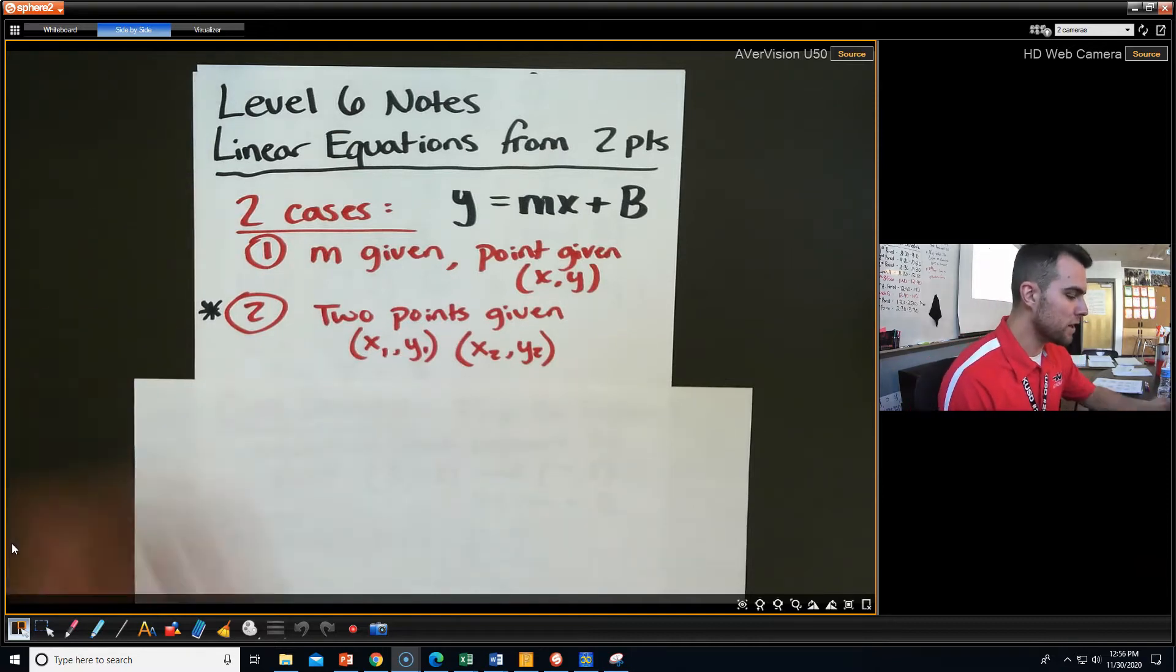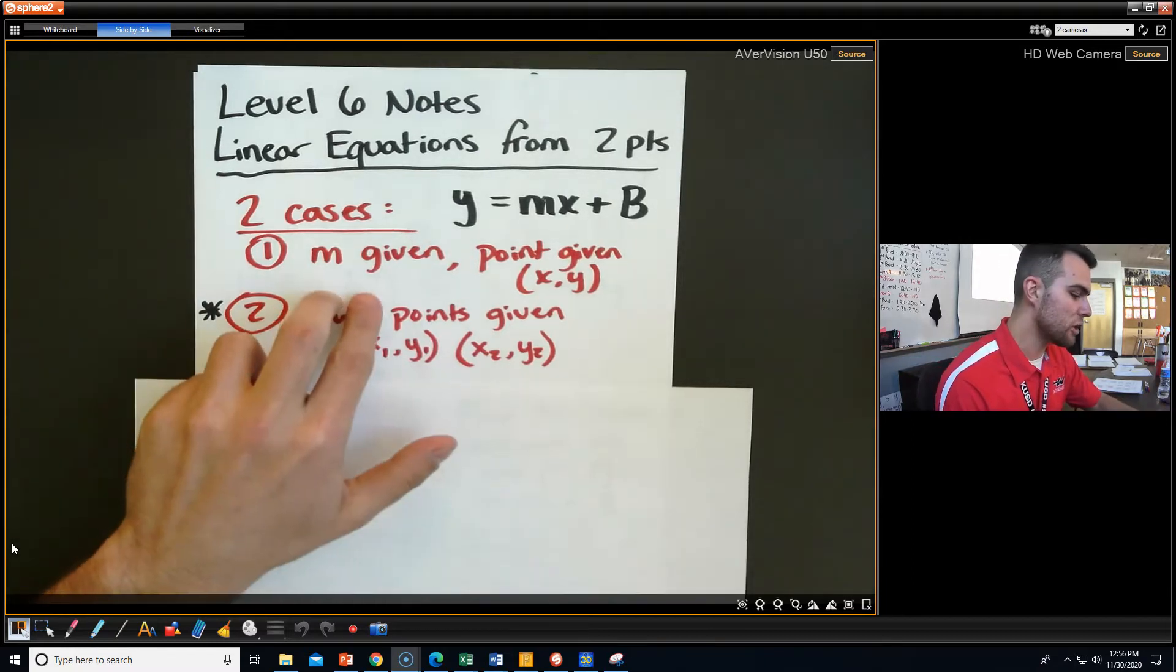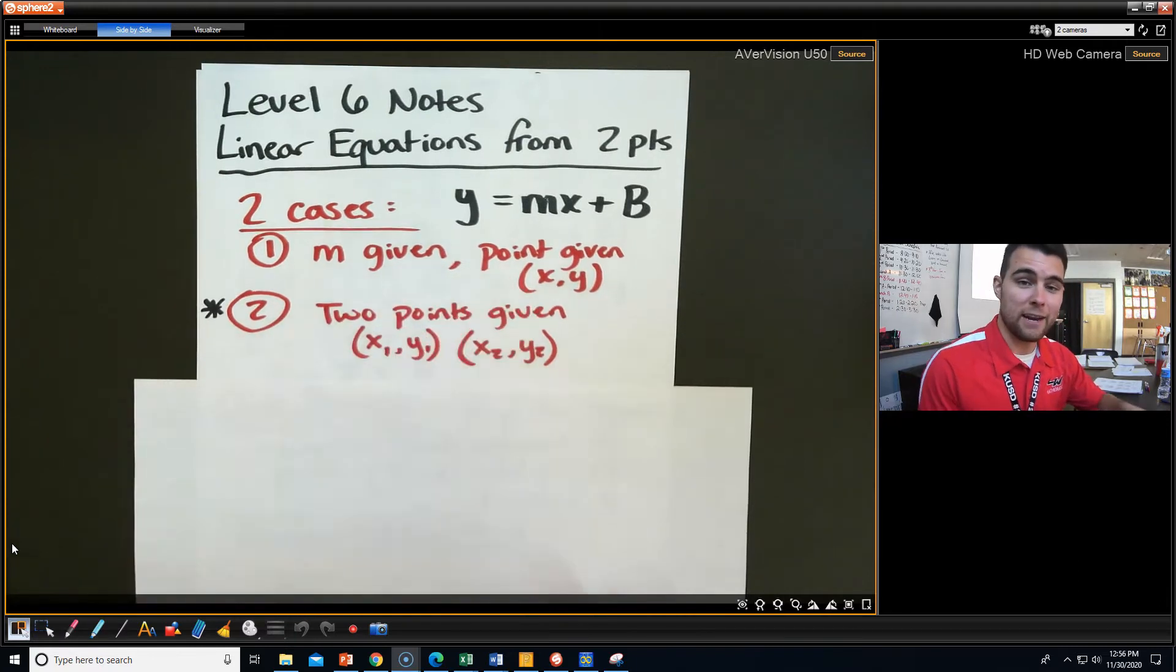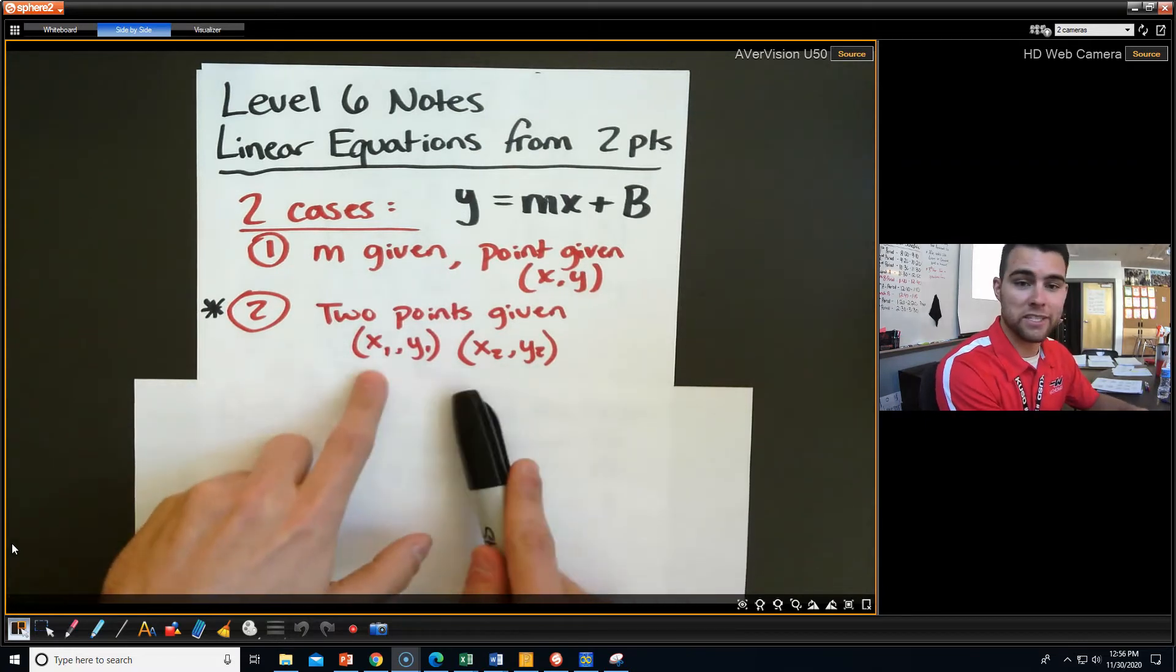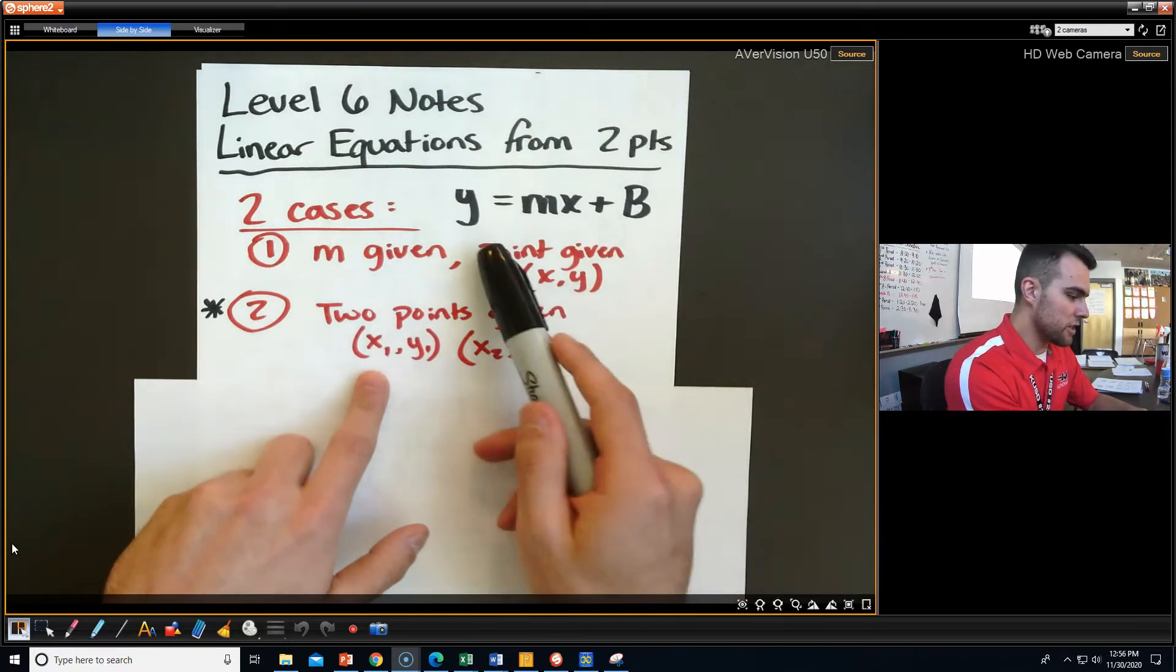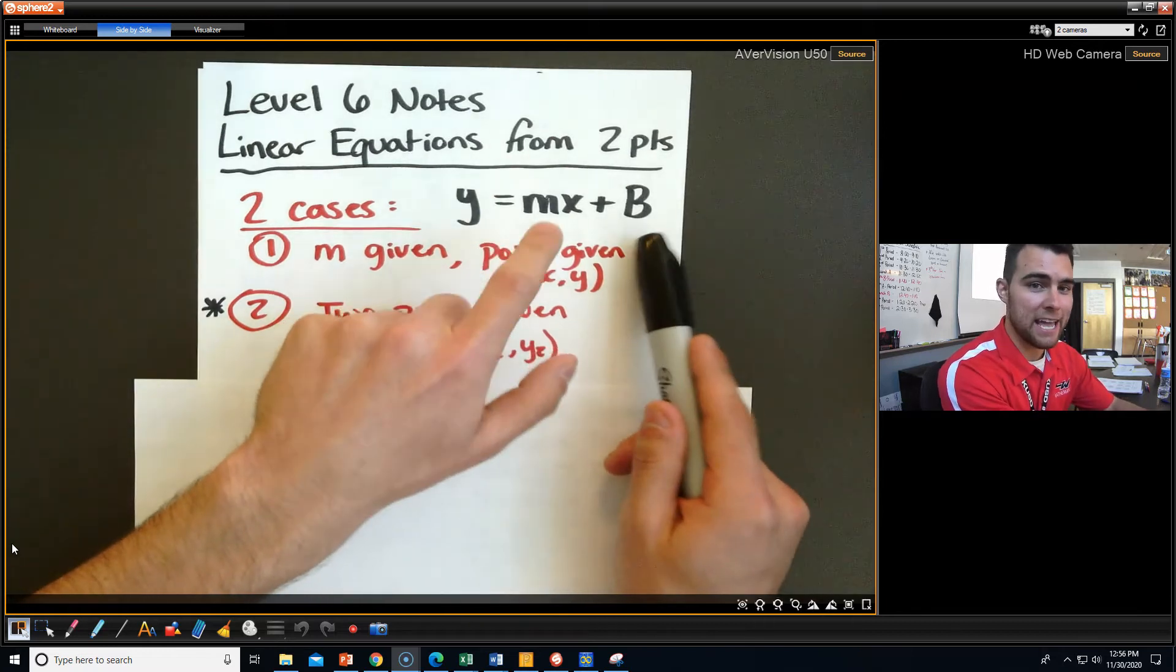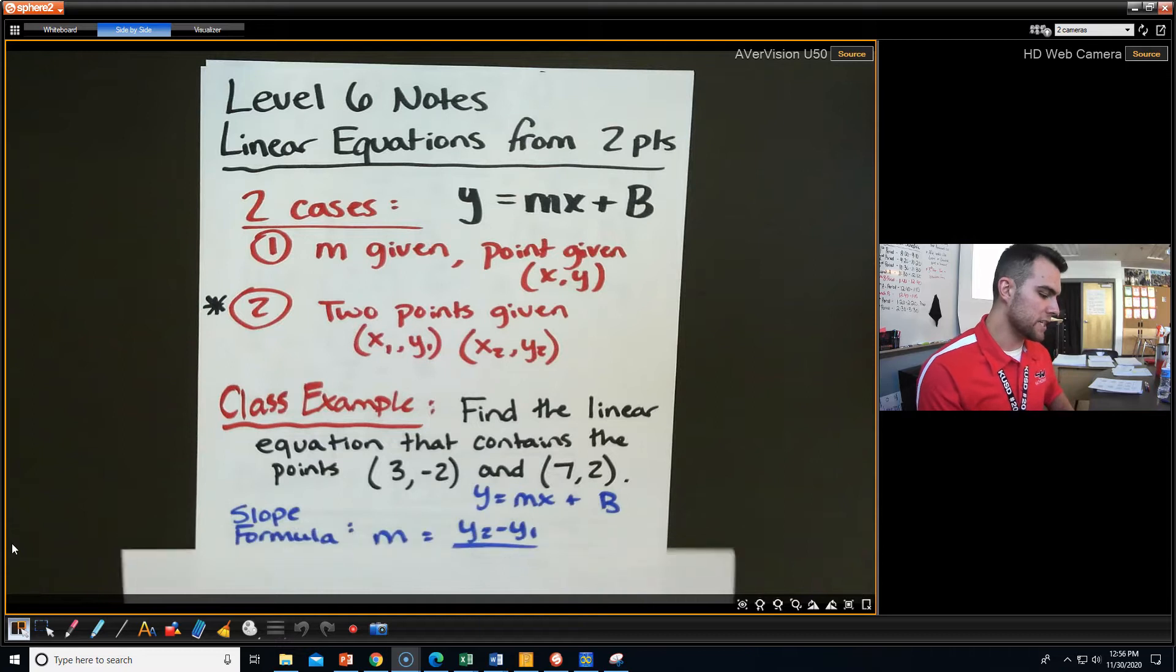We've been looking at really one case of getting a linear equation, which was last lesson. That was where I gave you the slope, I gave you a point, and then I want you to find that linear equation. Today, though, I want us to see how, just given two points, we actually have all the information we need to get this linear equation. And remember, our linear equation is y equals mx plus b, and we really just need that m and that b.